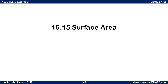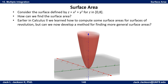This is Jack Jackson. In this video we're going to talk about how to use integrals to find surface area. For example, consider the surface defined by z equals x squared plus 2y squared, for z running from 0 to 8. So roughly it looks something like this surface here. How can we find the surface area? You may have done surface areas before, back in calculus 2 or calculus 1, where we did surface area of revolution. But this is a little bit different — this is not quite a surface area of revolution.